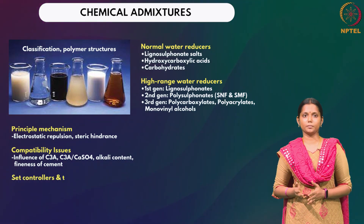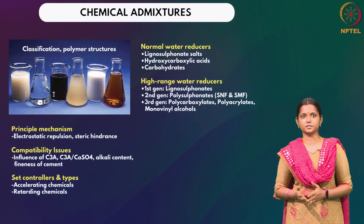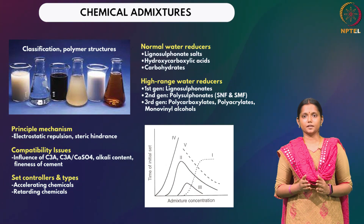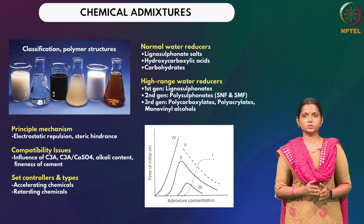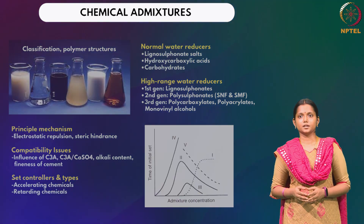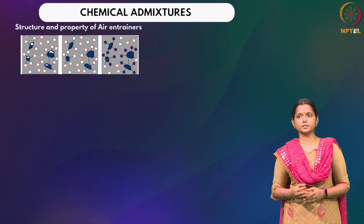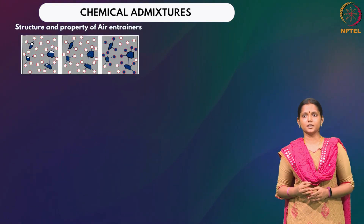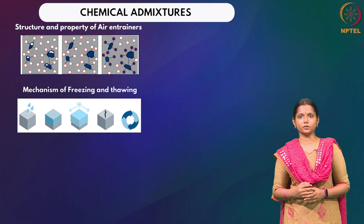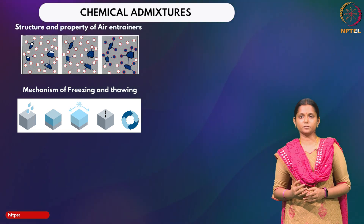We will then study the second category of chemical admixtures: set controllers. These are broadly classified into two types based on their ability to accelerate or retard the setting time of concrete. The third type of chemical admixtures is air entrainers, which are used to avoid deterioration due to freeze-thaw reactions.